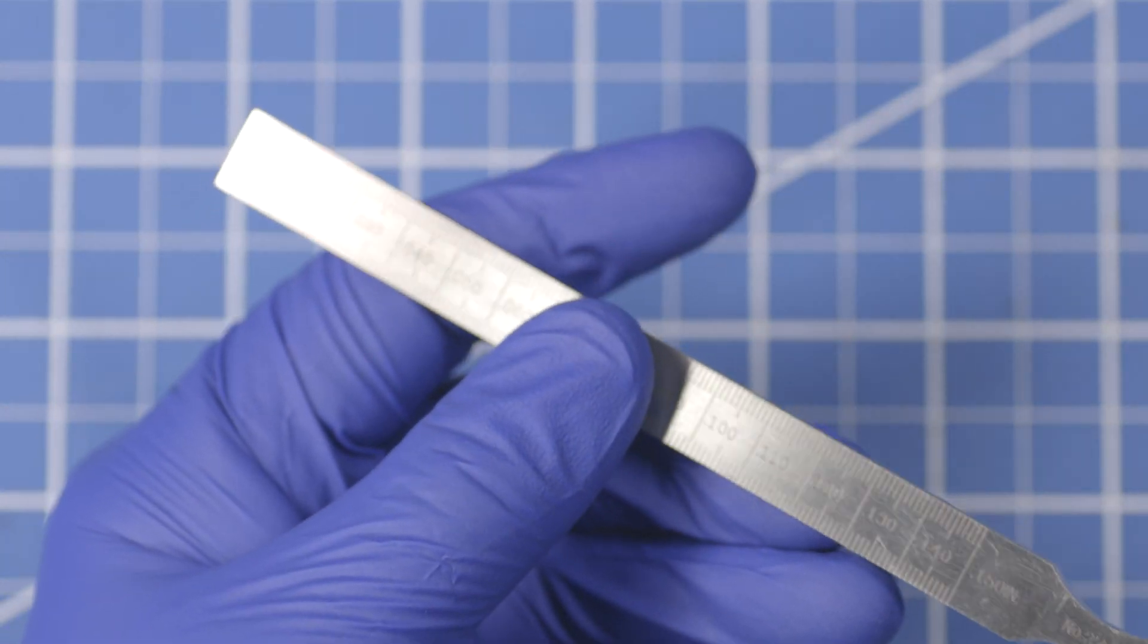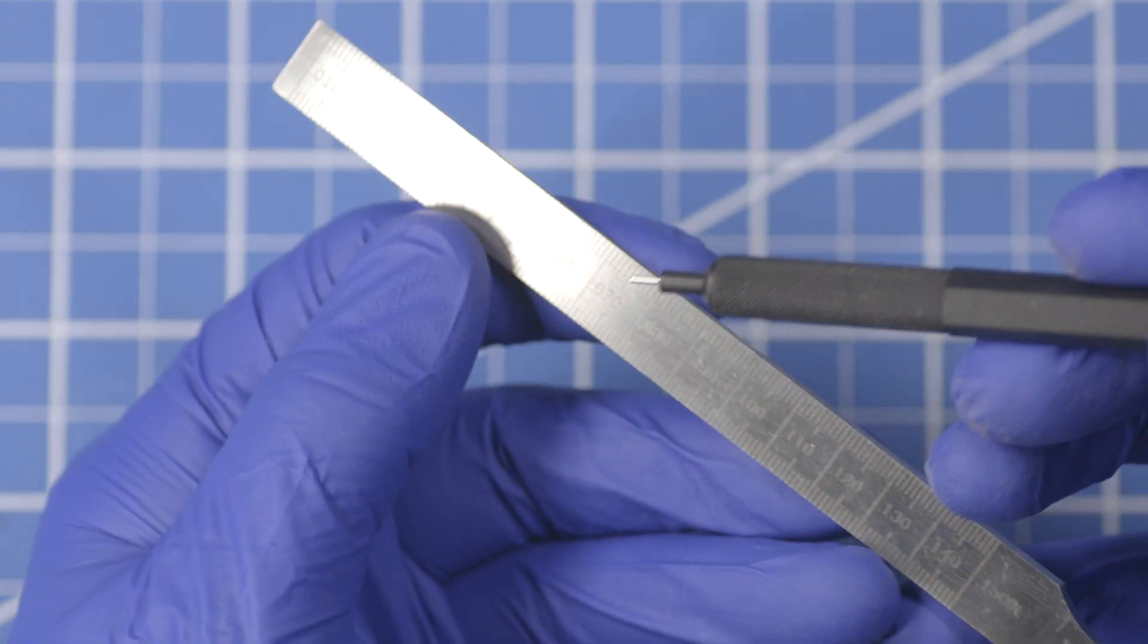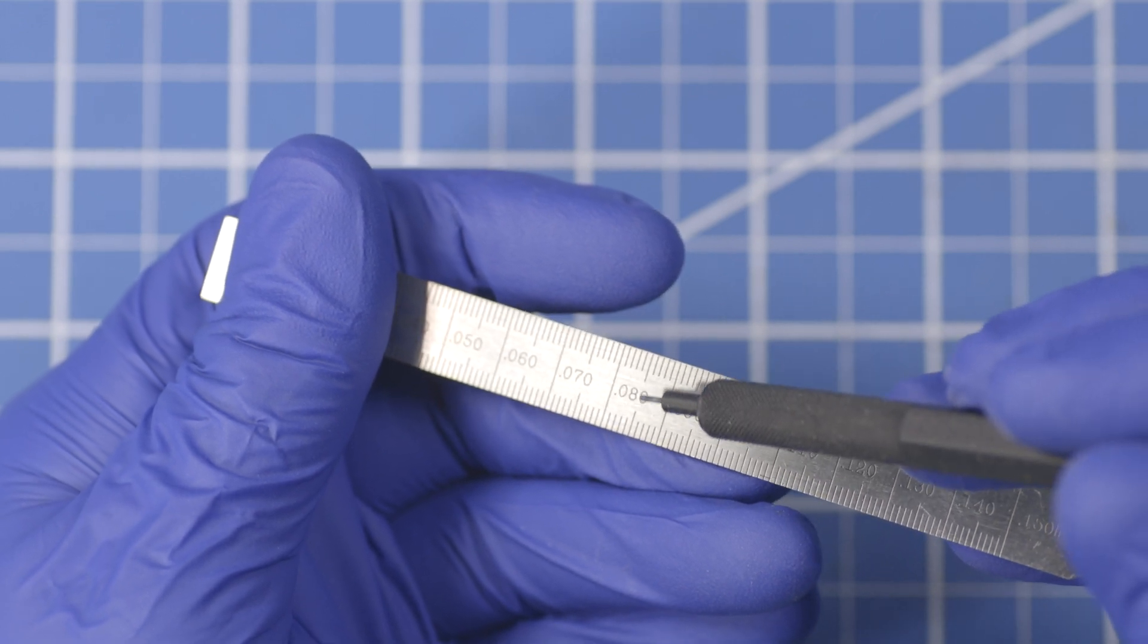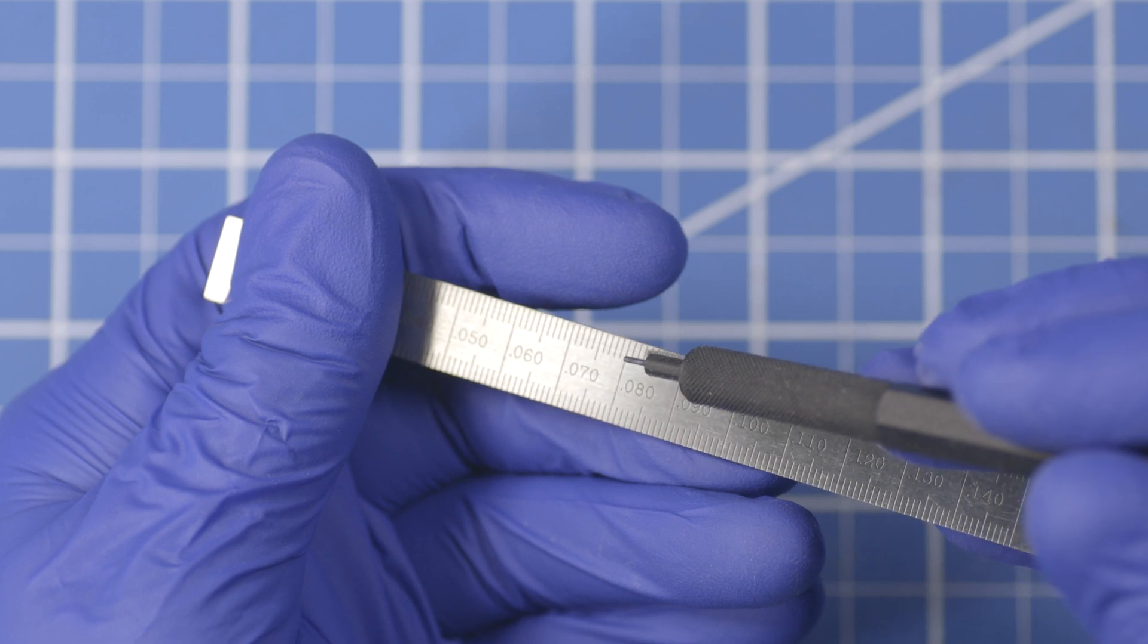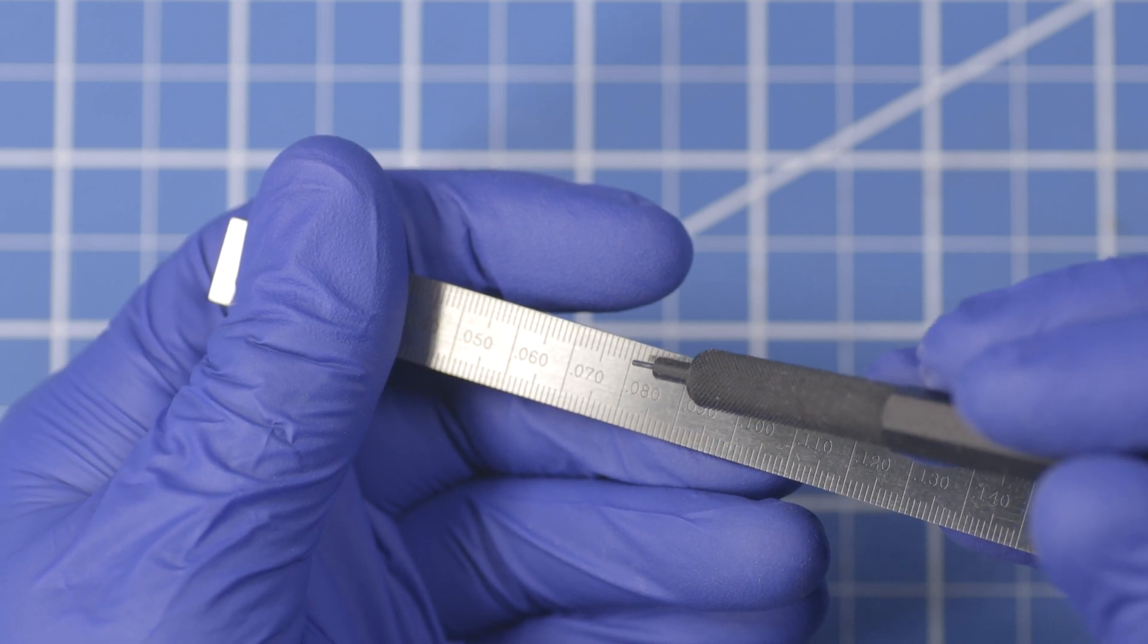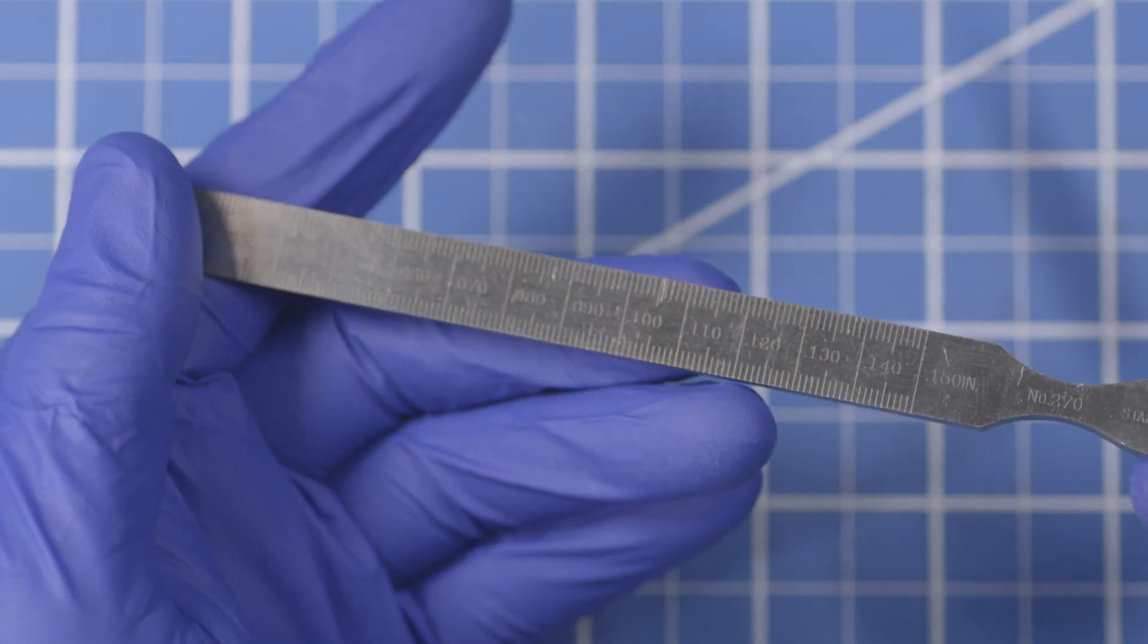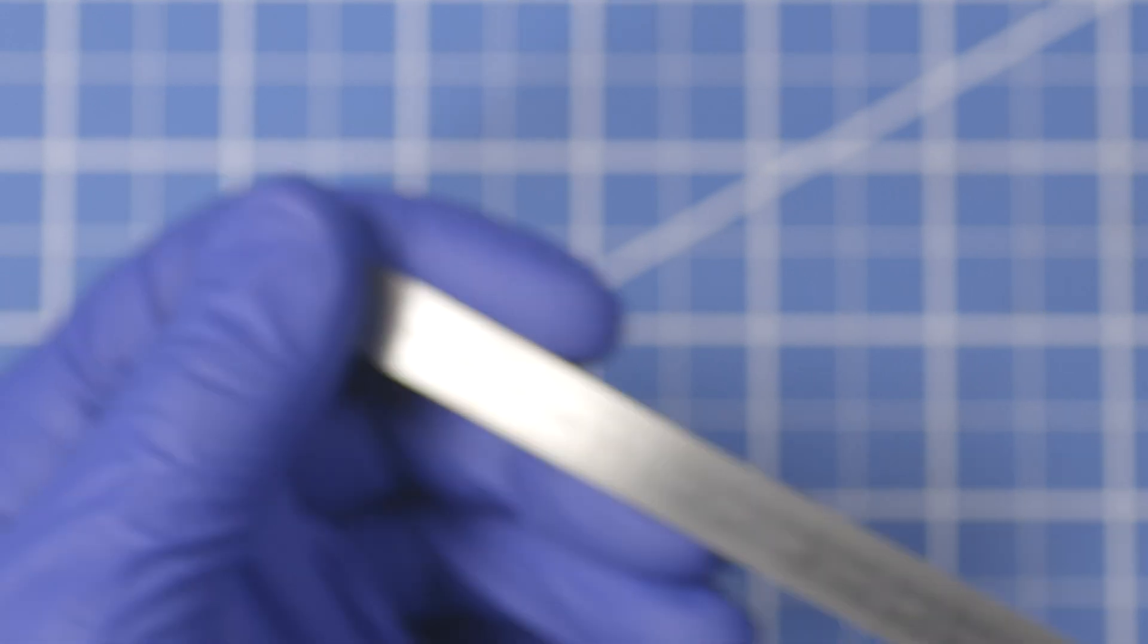Something to be aware of when you're reading one of these things is that even though it says 80 thousandths and you're like, it's right here in the center, it's not this line, it's this line. And that could certainly make a difference if you're depending on this for measuring shims or whatever you're measuring. You don't want to be five thousandths off.